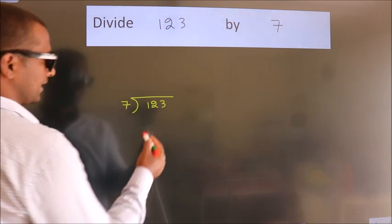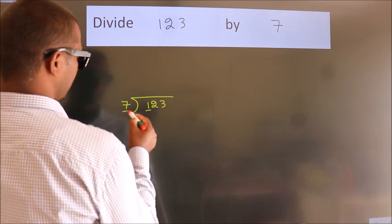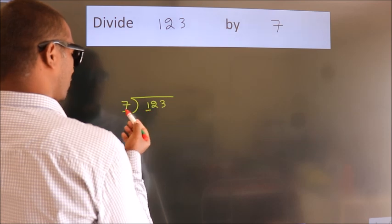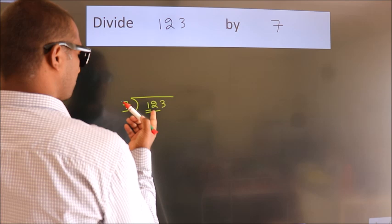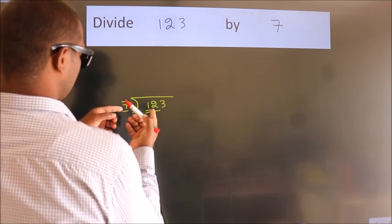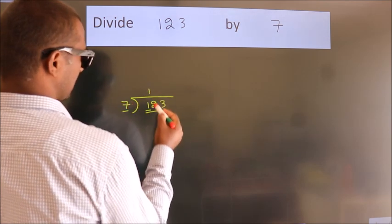Next. Here we have 1, here 7. 1 is smaller than 7, so we should take 2 numbers, 12. A number close to 12 in 7 table is 7 once 7.